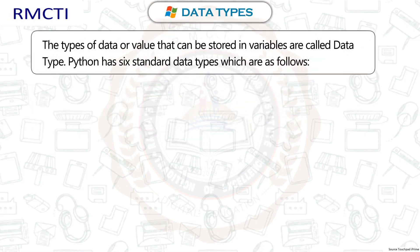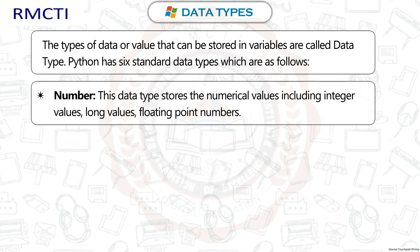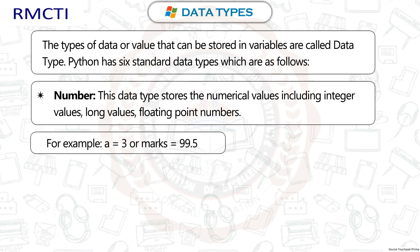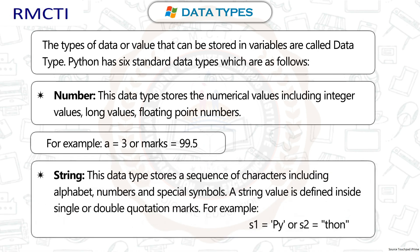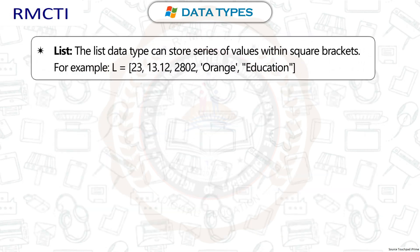Data types: The types of data or values that can be stored in variables are called data types. Python has six standard data types. Number: This data type stores numerical values including integer values, long values, and floating point numbers. For example, a = 3 or marks = 99.5. String: This data type stores a sequence of characters including alphabet, numbers, and special symbols. A string value is defined inside single or double quotation marks. For example, S1 = 'PY' or S2 = 'THORN'.